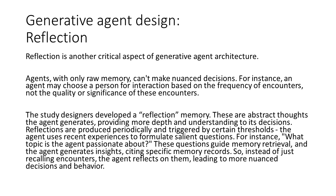Reflection is another critical aspect of generative agent architecture. Agents with only raw memory can't make nuanced decisions. For instance, an agent may choose a person for interaction based on the frequency of encounters, not the quality or significance. The study designers developed a reflection memory — abstract thoughts the agent generates, providing more depth and understanding to its decisions. Reflections are produced periodically and triggered by certain thresholds. The agent uses recent experiences to formulate salient questions, such as: what topic is the agent passionate about? These questions guide memory retrieval, and the agent generates insights citing specific memory records. Instead of just recalling encounters, the agent reflects on them, leading to more nuanced decisions and behavior.